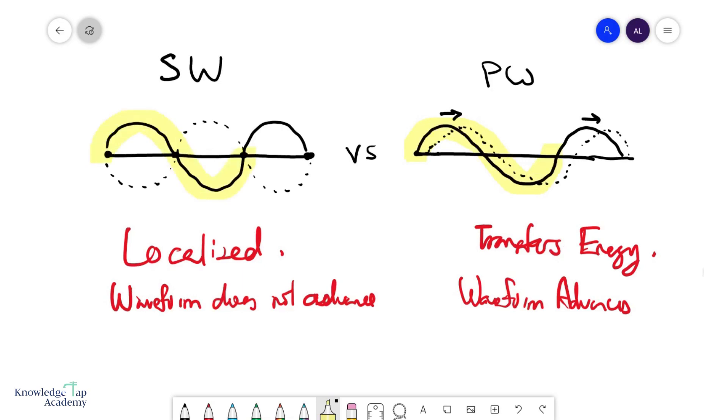I can say the same thing. It's just how we describe this is slightly different. For a progressive wave, we simply say that the wavelength is the distance between any two points in phase with each other. The distance between any two points in phase with each other is one wavelength.